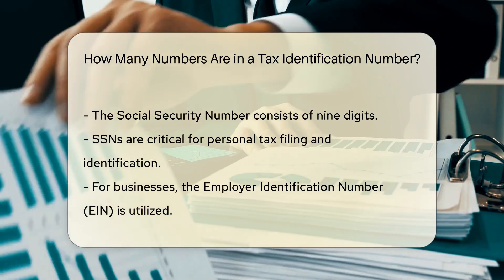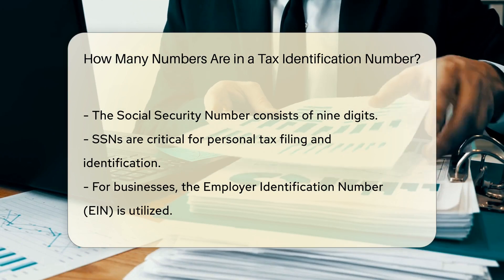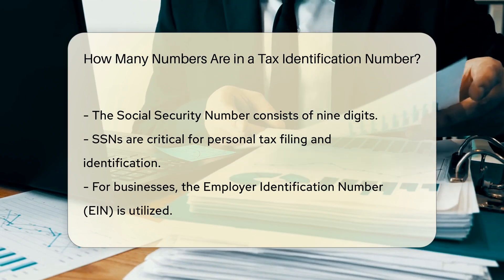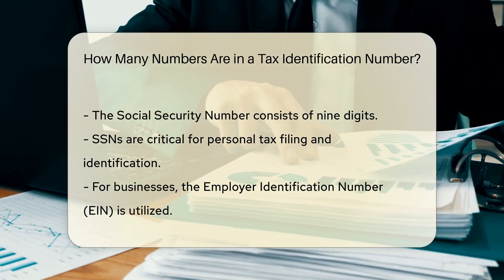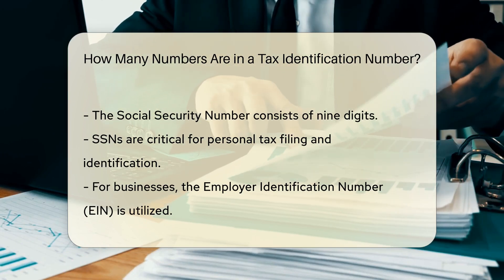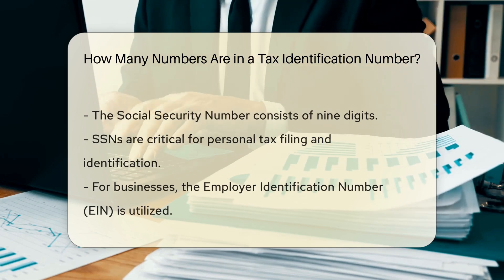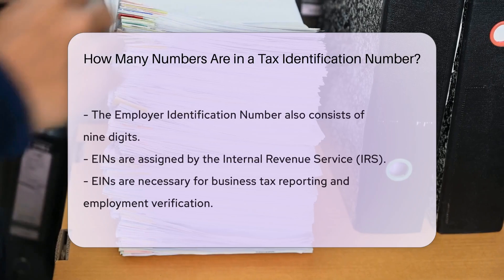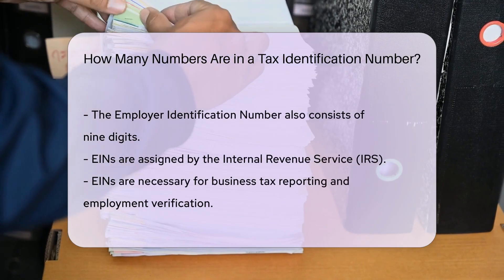For businesses, the Employer Identification Number, or EIN, is used. An EIN also consists of nine digits and is assigned by the Internal Revenue Service. This number is vital for business tax reporting and employment verification.